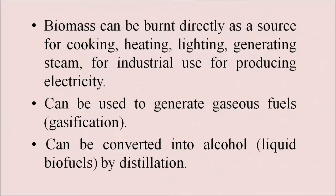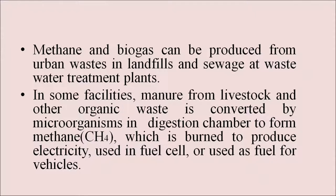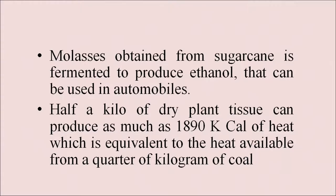Biomass can be used to generate gaseous fuels or converted into alcohol by distillation. Methane and biogas can be produced from urban wastes in landfills and sewage at wastewater treatment plants. In some facilities, manure from livestock and other organic waste is converted by microorganisms in digestion chambers to form methane, which is burned to produce electricity, used in fuel cells or as fuel for vehicles. Molasses obtained from sugarcane is fermented to produce ethanol for use in automobiles. Half a kilogram of dry plant tissue can produce as much as 1890 kilocalories of heat, equivalent to the heat from a quarter kilogram of coal.